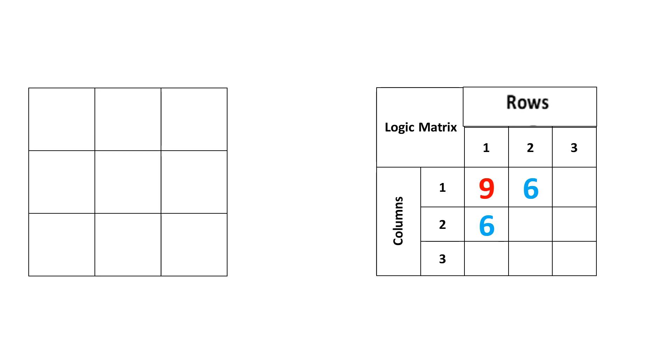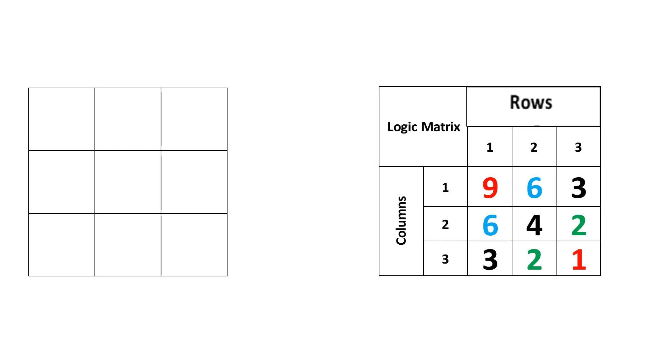So this is 1 row and 3 columns, 2 rows and 2 columns, and 3 rows and 1 column. That way we can complete the entire logic matrix like this. Now going further, we compare both the cases.